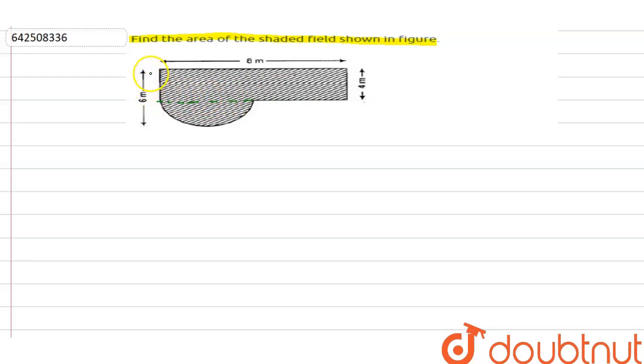given in the figure that 4 meter. So this distance is equal to 2 meter. Now this is a semicircle which has a radius of 2 meter, and this is, let's say